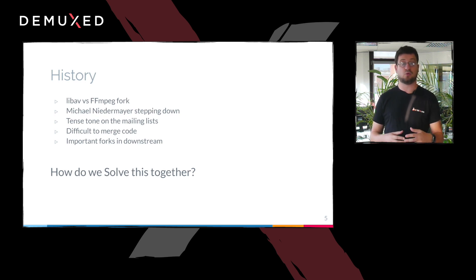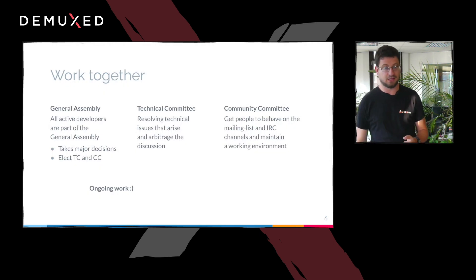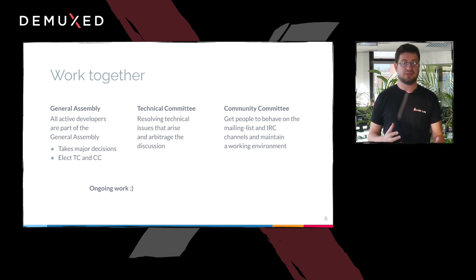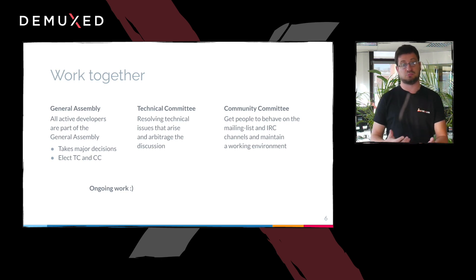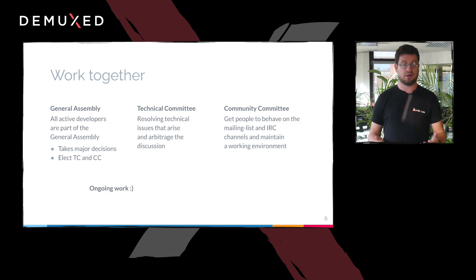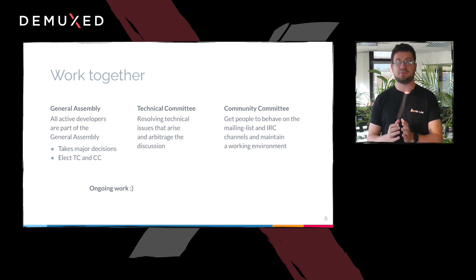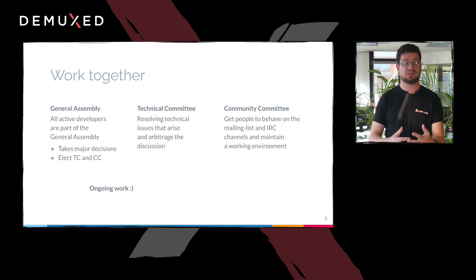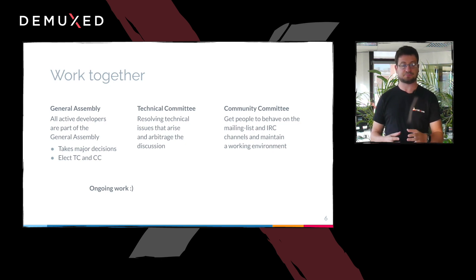We need to solve that together with people who are downstream and using FFmpeg, not only people inside the FFmpeg community. So in the last year, mainly, we've worked on that. There are technical fixes we need to do, but they are mostly community things. The first thing is we now have a general assembly, because there is no dictator at the head of FFmpeg. The general assembly is basically all the active developers — if you've been active in the last year, you get a vote. This general assembly can take major decisions about policies, development model, et cetera, and it also elects the technical committee and the community committee.